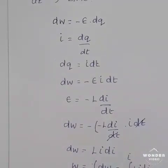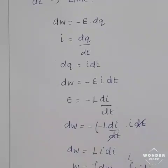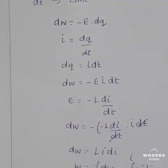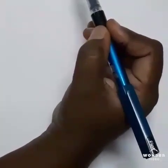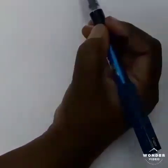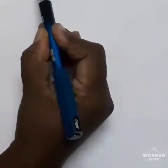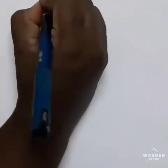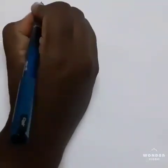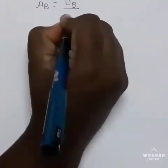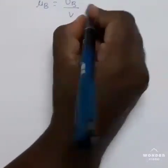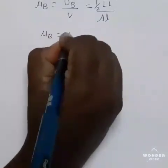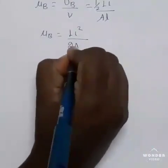This work done is stored as magnetic potential energy. Therefore, magnetic potential energy U_B = ½LI². Next, we find the value of energy density. The energy density is the energy stored per unit volume of the space. Here, u_B is the energy density, U_B is the magnetic potential energy, and V is the volume of the space. Volume V = area × length. Therefore, energy density u_B = U_B/V = (½LI²)/(A·L).